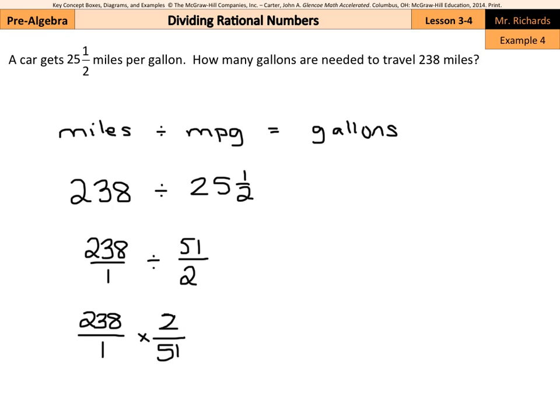Now most likely what you would have done was multiply this straight out to get 238 times 2 is 476 over 51. And maybe divided 476 by 51 to get 9.333, which is the same thing as 9 and 1/3, which works. That's our answer.